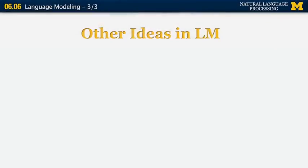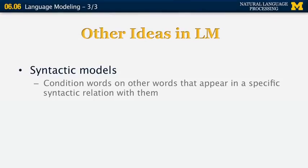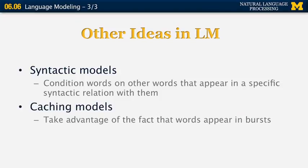There are techniques to address these problems. For example, a syntactic language model looks not just at the most recent words, but also at the most recent words that are syntactically related to the current word. You parse the sentence and determine that 'pizza' is related to 'tasty' via a dependency relation, then condition 'tasty' on 'pizza' and 'interesting' on 'class.' Another idea is the caching model, which takes advantage of the fact that words appear in bursts. If you see the word 'Cuomo' in a document, it's very likely to appear again, so you give recently seen words higher probability of appearing in the future.